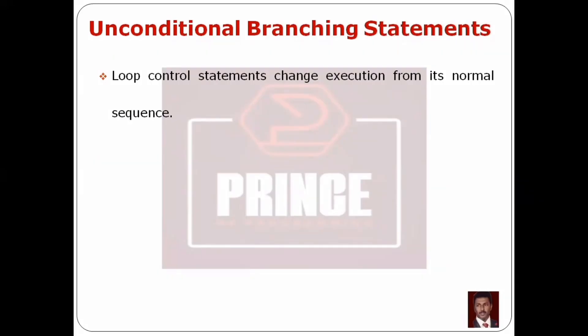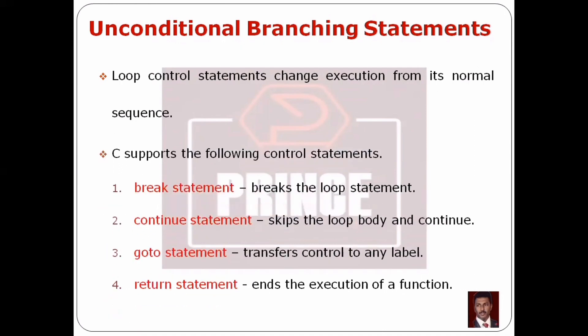A loop is now executed and it changes the normal execution. Some loop control statements are available in C programming. These loop control statements are unconditional branching statements. C supports the following branching statements.